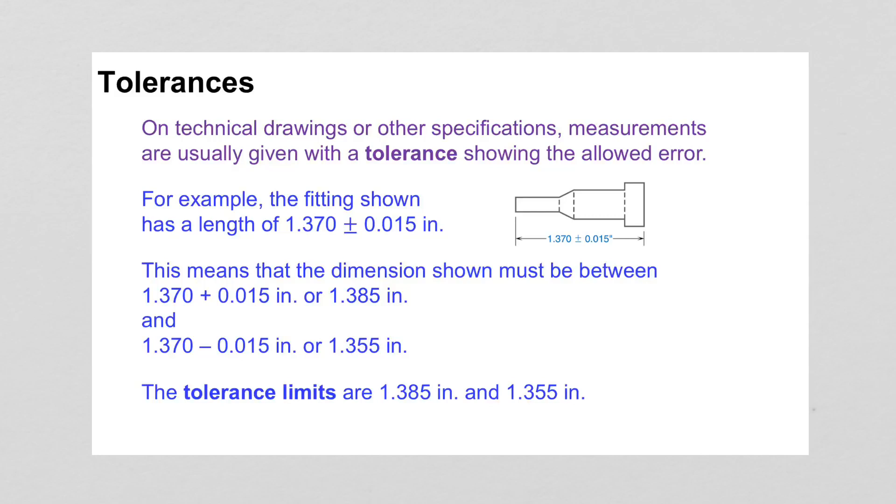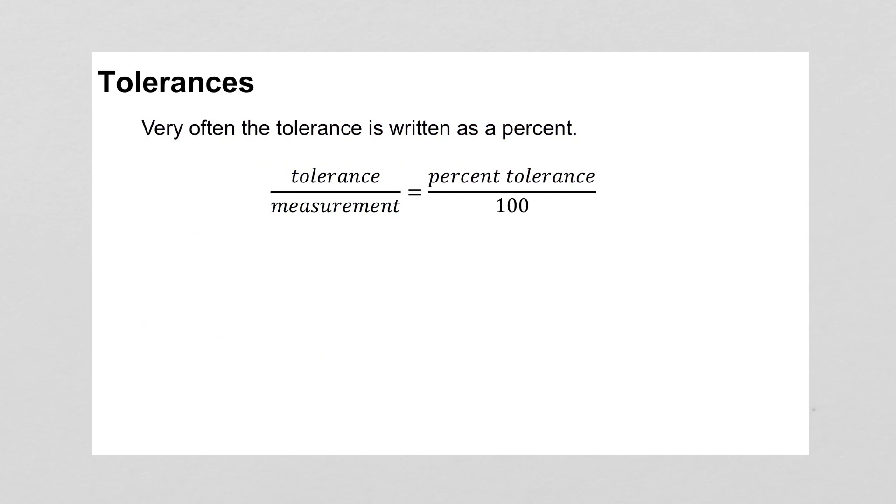Tolerance. On technical drawings or other specifications, measurements are usually given with a tolerance showing the allowed error. For example, in this fitting, its length could be added, you could add 15 thousandths of an inch or subtract that and it's still being okay fitting. Tolerance can also be written as a percent. So the tolerance over the measurement is equal to the percent tolerance over 100.